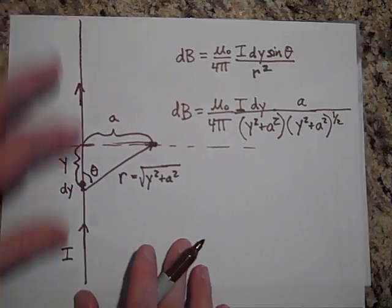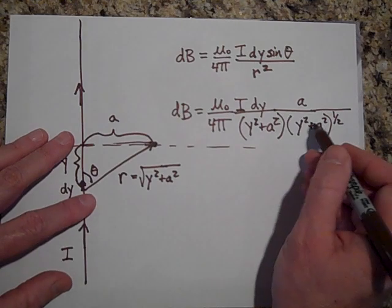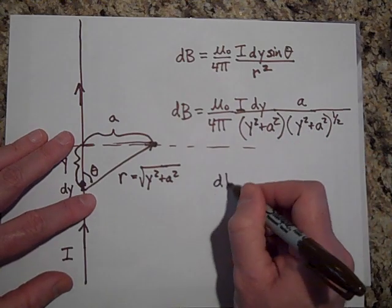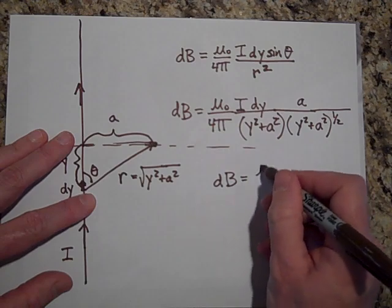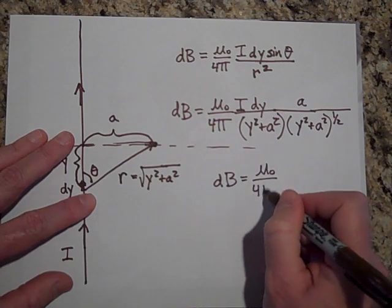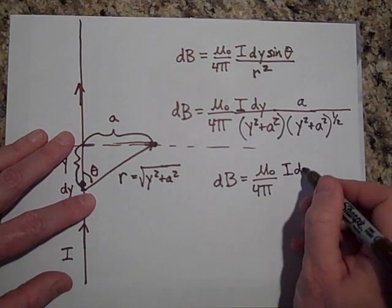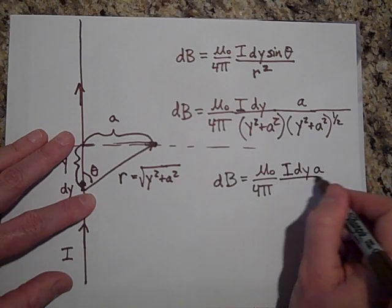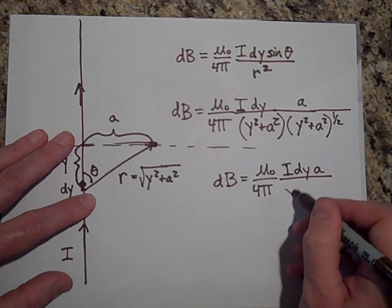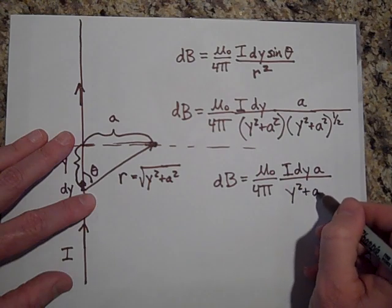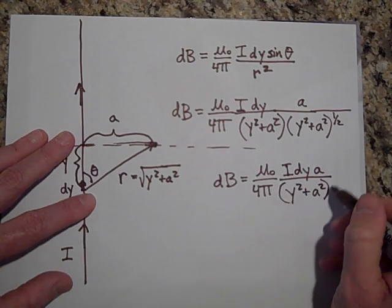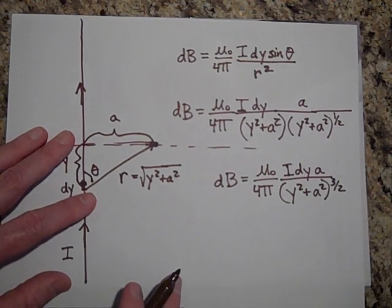Okay. Well, it turns out then that I can combine these a little bit. And so DB is equal to mu naught over four pi. And then I'm going to have I DY A, A just being a constant. And then this can combine to Y squared plus A squared to the three halves power.